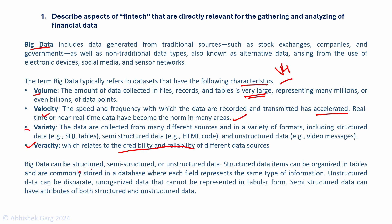Big data can be structured, semi-structured and unstructured. Structured data items can be organized in tables and are commonly stored in databases where each field represents the same type of information. Unstructured data is unorganized data that cannot be represented in tabular form, such as text, videos and tweets. Semi-structured data can have attributes of both structured and unstructured data.